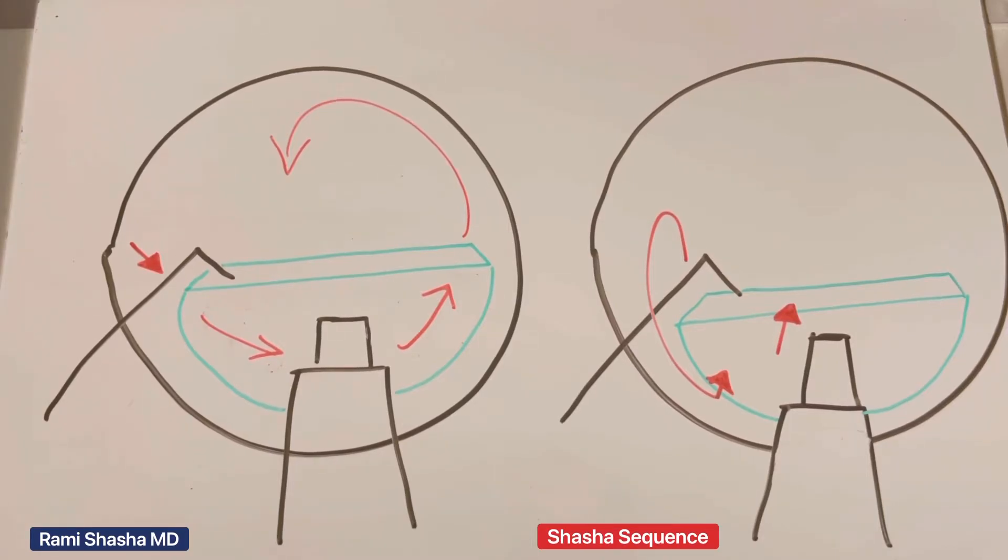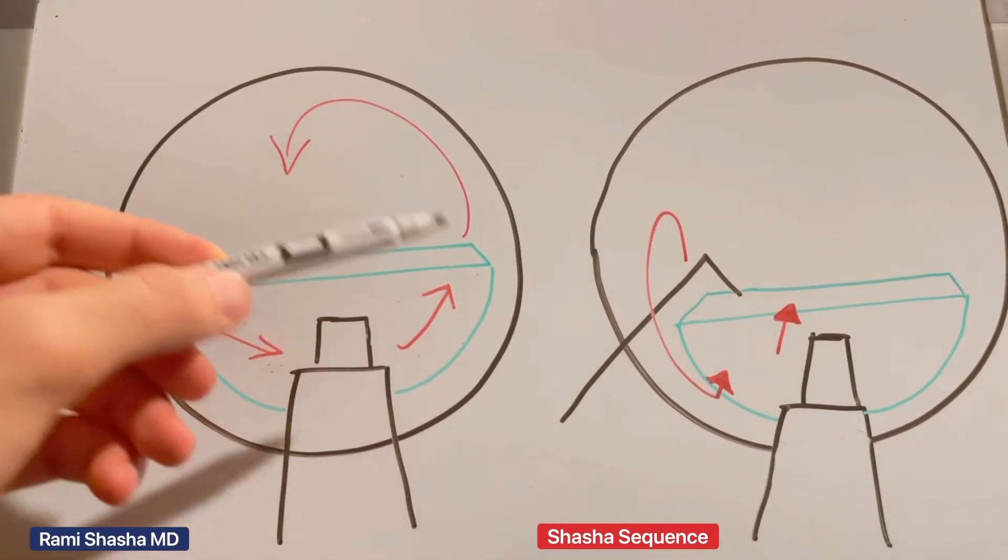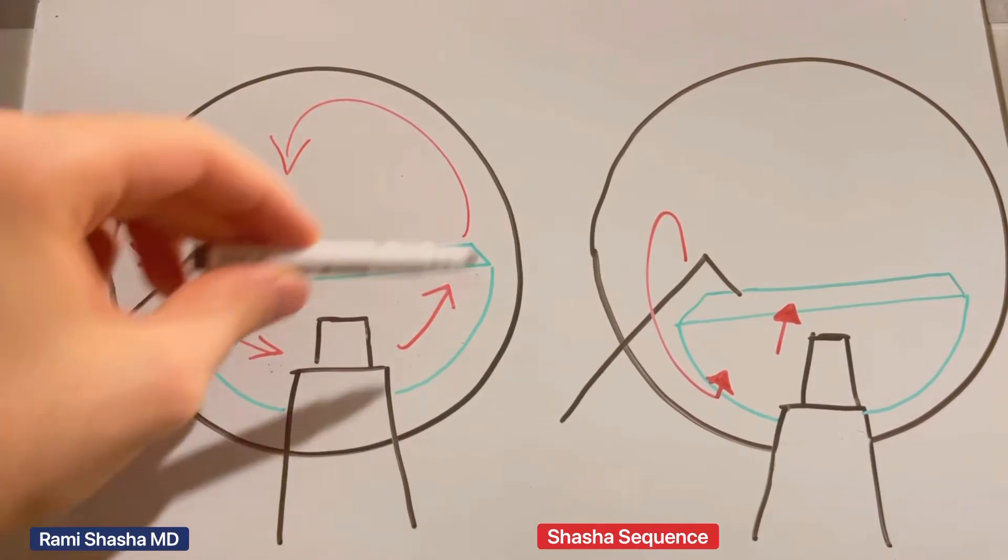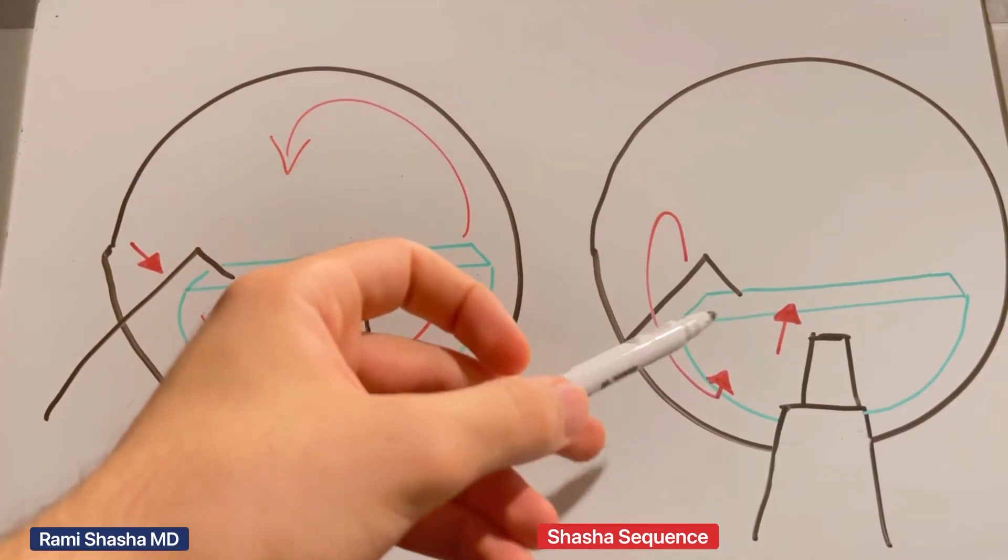This works on all density cataracts. This is like a shortcut that eliminates the step of needing to rotate, and it works on non-rotating hemi-nuclei.